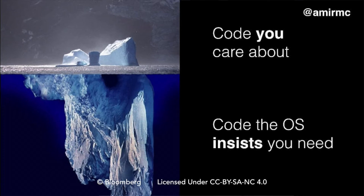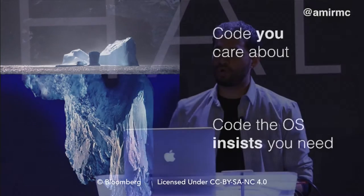Another way of thinking about that is an iceberg. At the top is the code you actually care about — that's your business logic, your value, where you make your money. The stuff underneath is the operating system that contains all the stuff it insists you must have, because that's just how operating systems were constructed.